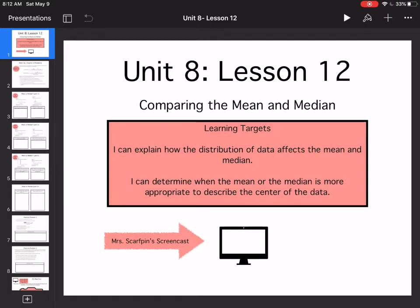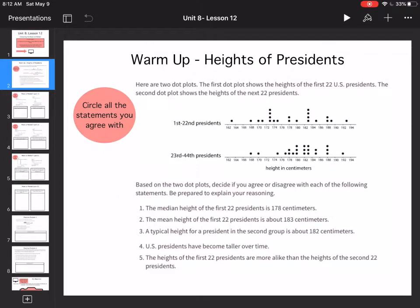The idea is that you've learned how to find mean and median in previous grades. Now you're going to apply it based on reasoning. Here are two dot plots. The first dot plot shows the heights of the first 22 presidents. The second dot plot shows the heights of the next 22 presidents. So that's saying there are 44 presidents.